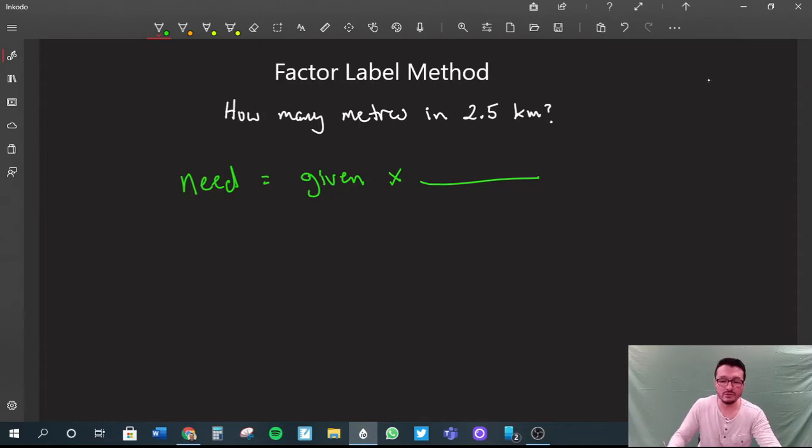This conversion factor is going to have a unit at the bottom—the unit that you're going to cancel—and at the top you're going to write the unit to keep, or the unit you want. This portion here is called your conversion factor.